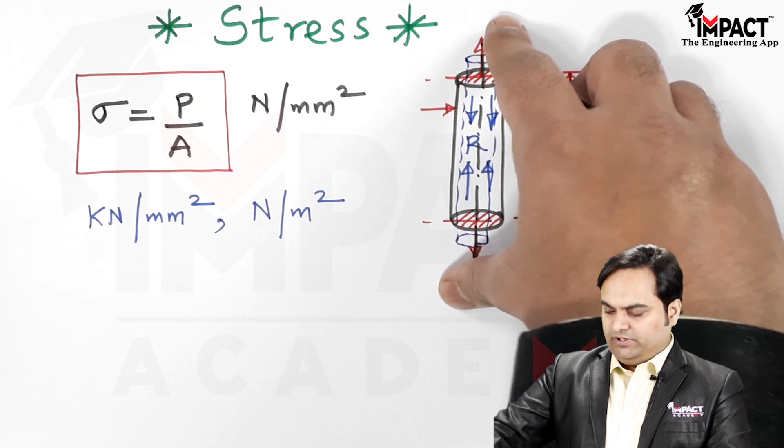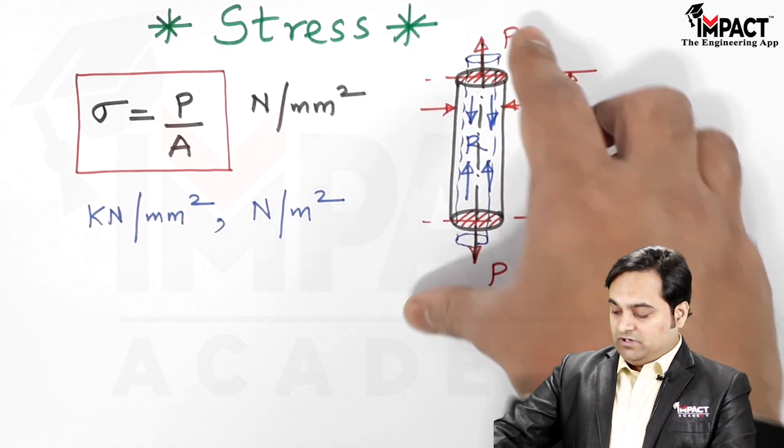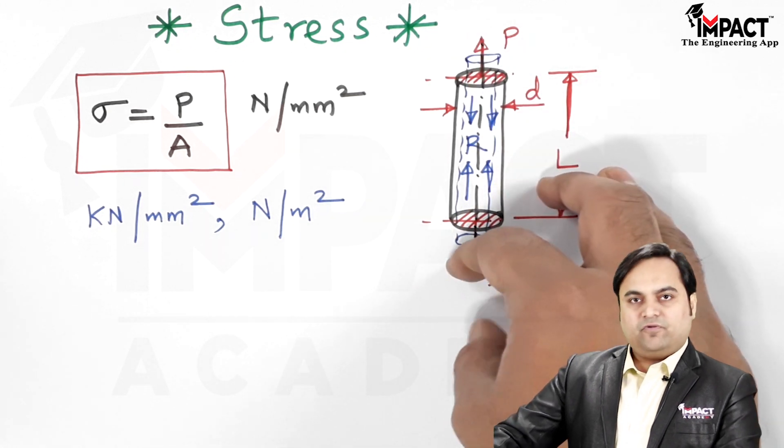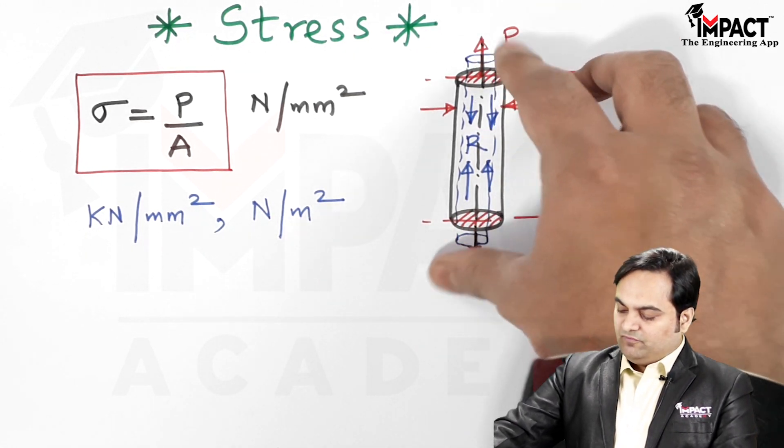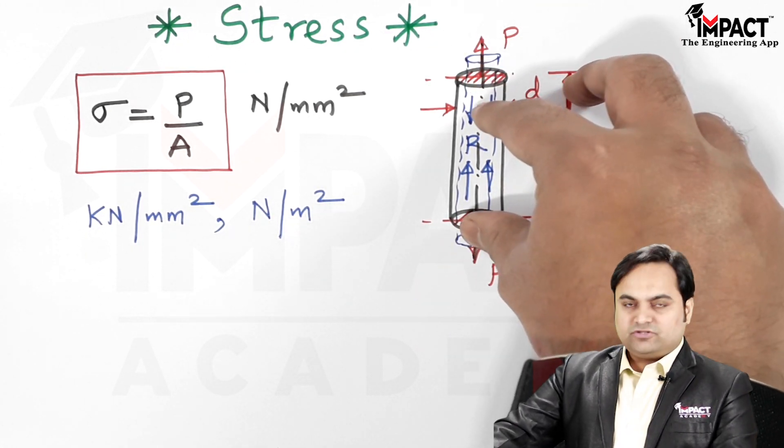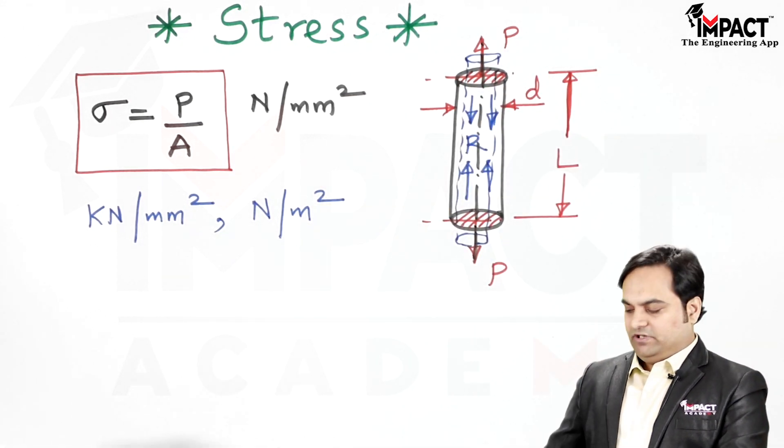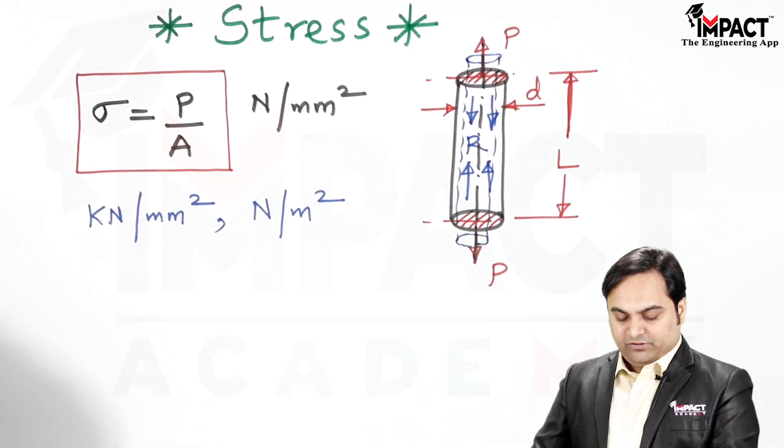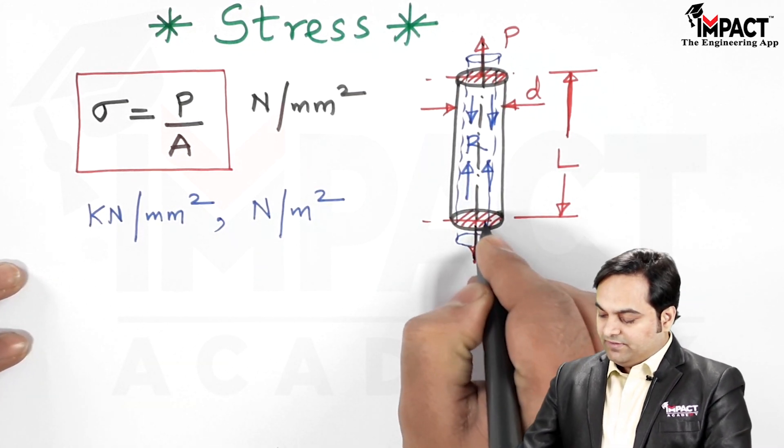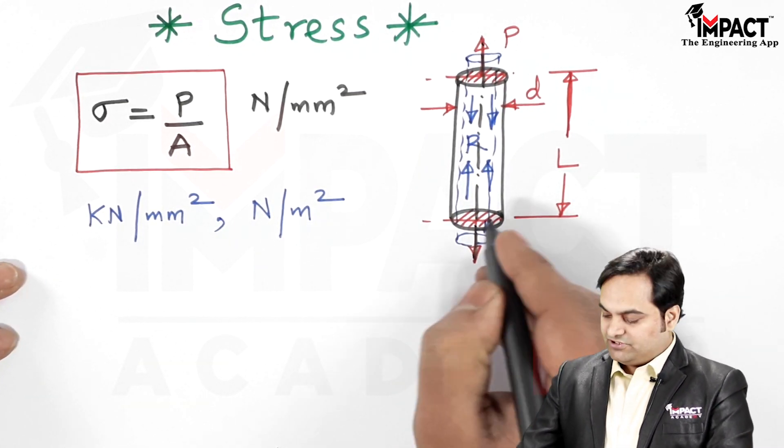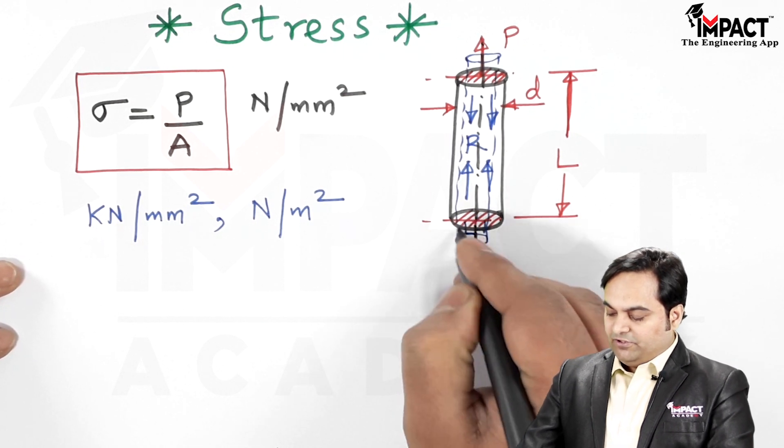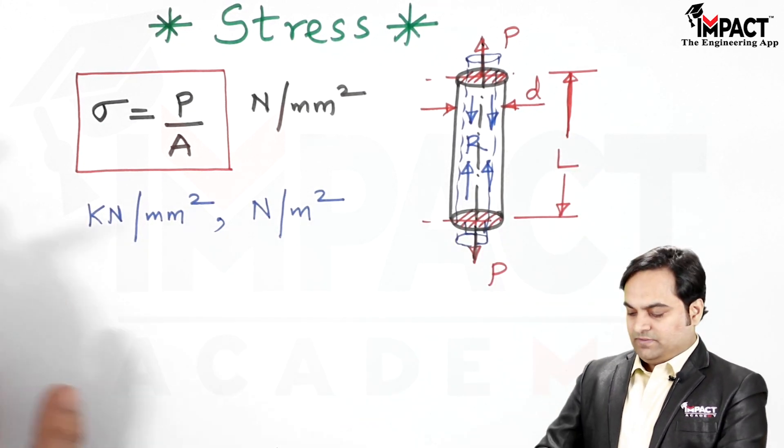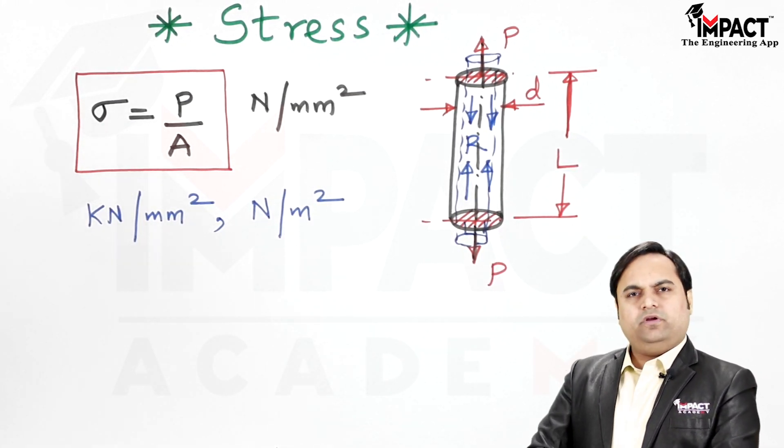Here we can see that it is a tensile kind of loading, so it will be tensile stress. But the moment we change the direction of the load, instead of being a pull type of load if we apply a push type of load, the rod is going to get compressed, so the kind of stress would be called as compressive stress. The load is perpendicular to the cross-sectional area, so this is the shaded area or the cross-sectional area.